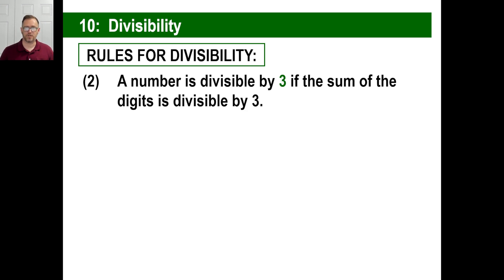Rule two. And of course, you can stop these anytime and copy this down, but make sure you have a nice page of these notes. A number is divisible by 3 if the sum of the digits is divisible by 3. In other words, let's say you have the number 7521 for example.